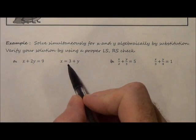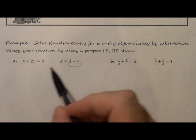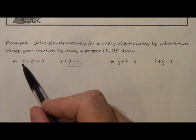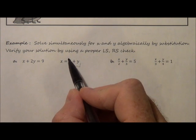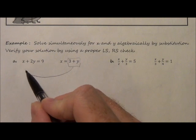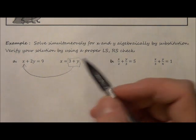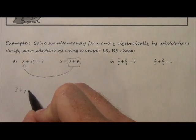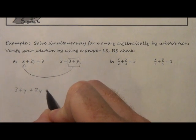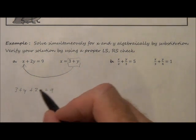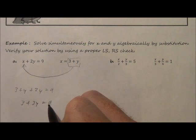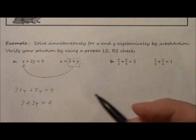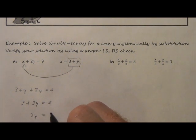As we can see, x equals 3 plus y, and over here we have an equation with x and y on the same side. So what if we were to substitute this 3 plus y in for where x is, so we'd end up getting 3 plus y plus 2y equals 9. Now it's just a matter of simplifying. So we simplify the left side, we get 3 plus 3y equals 9. Subtract 3 from both sides, so we get 3y equals 6.